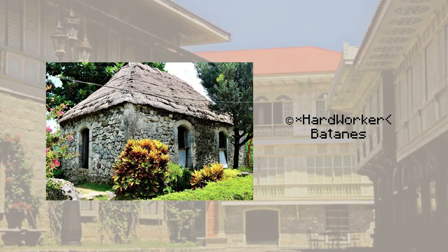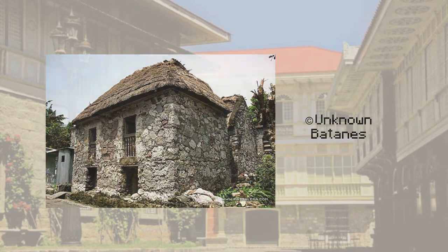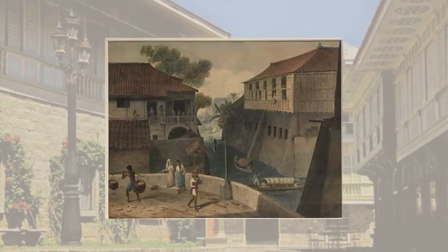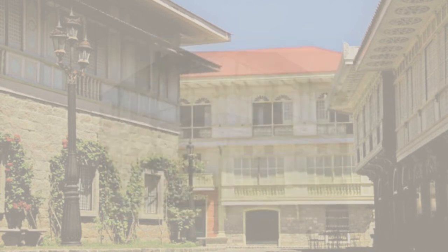First is Sinadumparan, a house with a submerged floor for storage. Second is Raku, a two-floor house with a ground floor as storage and a second floor for living quarters. The Bahay na Bato is the upgraded version of the Bahay Kubo to suit newer living conditions and the current political climate.